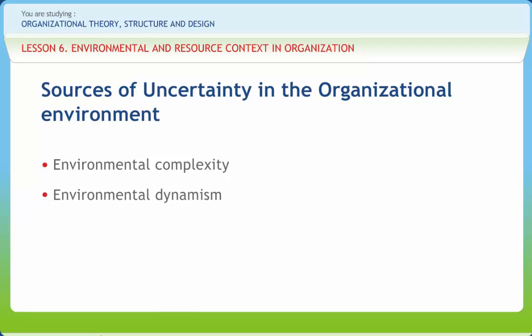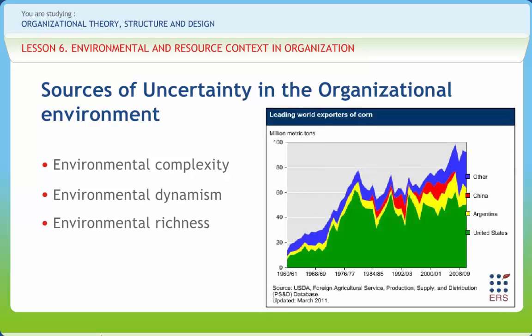The second source is environmental dynamism. An environment is said to be stable if forces affecting the supply of resources can be predicted, while the environment is said to be dynamic if the organization cannot predict the way forces will change over time. The third source is environmental richness, which is a function of the amount of resources available to support an organization's domain. Environments are poor for two reasons: the organization may be located in a poor country or region, or there is a high level of competition and organizations may not be able to get the resources desired.